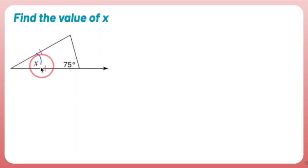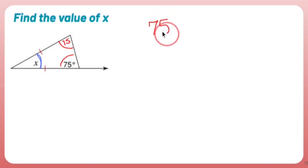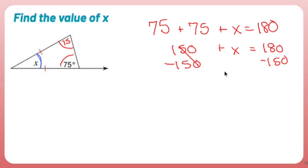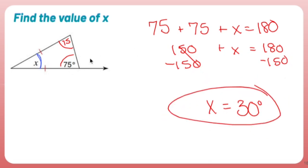Find the value of X. The two sides being equal means it's an isosceles triangle, so the base angles equal each other — both are 75 degrees. X is the missing angle in the triangle, so using the interior angle sum: 75 plus 75 plus X equals 180. 75 plus 75 is 150, so 150 plus X equals 180. Subtract 150 and X equals 30 degrees. Don't be fooled into using exterior angle thinking here — that extra line is just a distraction.